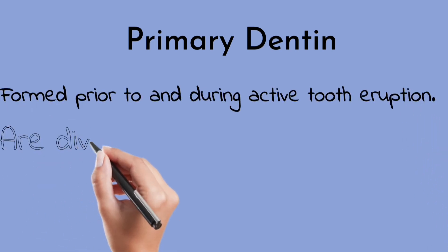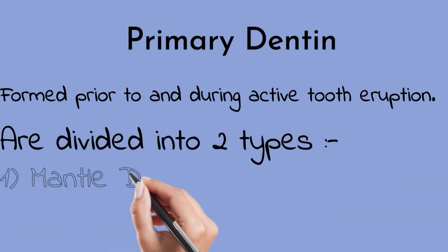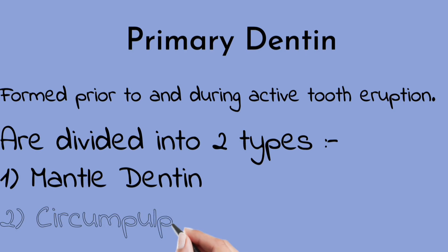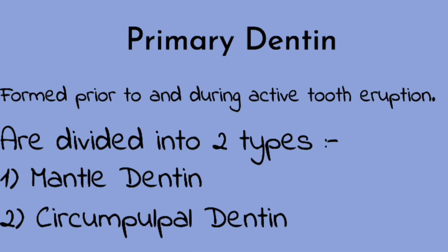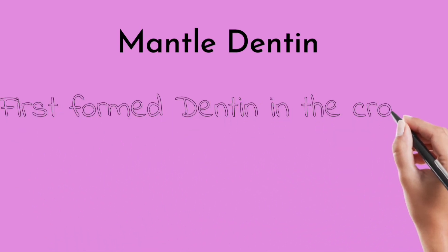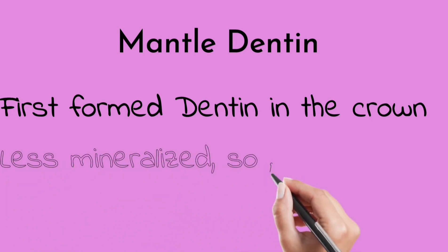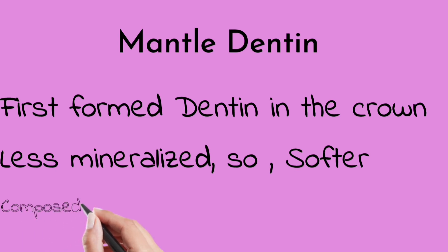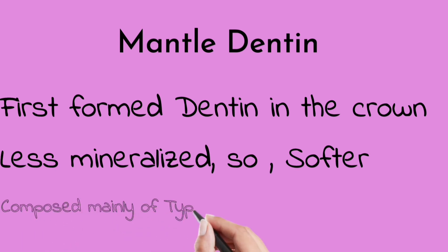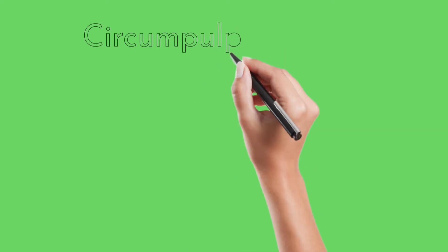Primary dentine is subdivided into mantle dentine and circumpulpal dentine. Mantle dentine is the first formed dentine in the crown — very important to remember. It is less mineralized and softer, and is composed mainly of Type 3 collagen fibers, also called von Korff's fibers — an important question: what are von Korff's fibers?